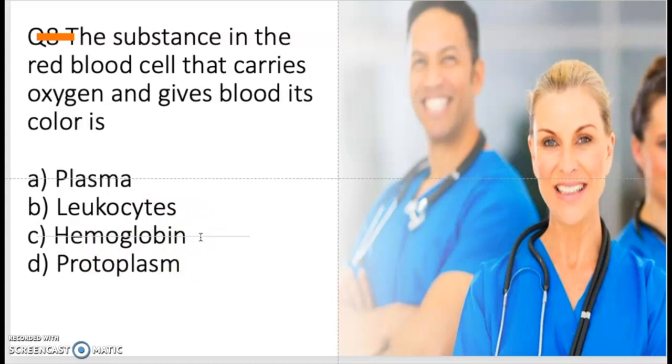The correct answer is hemoglobin. That's the iron in your RBCs, your red blood cells, that carries the hemoglobin molecule rich in oxygen. That's what gives your blood that bright red color.